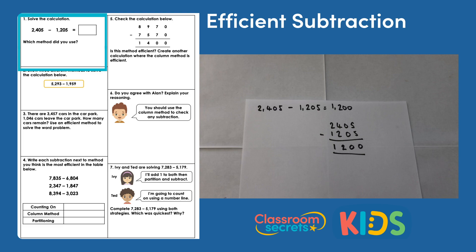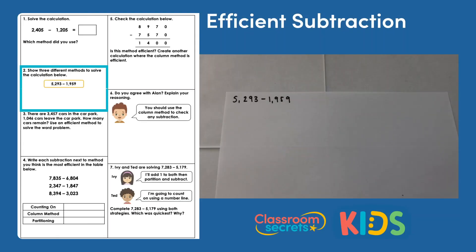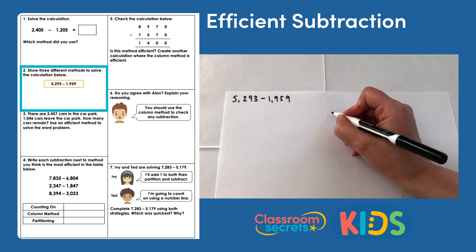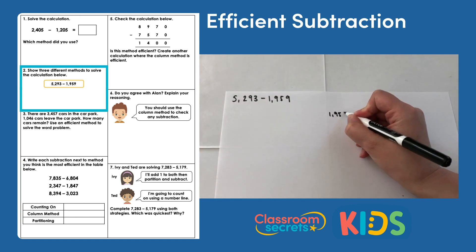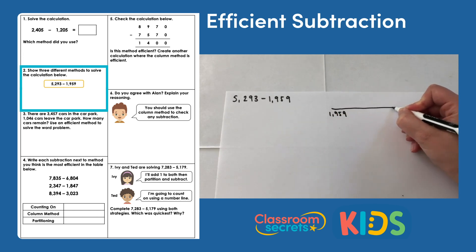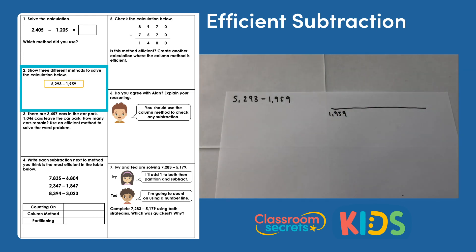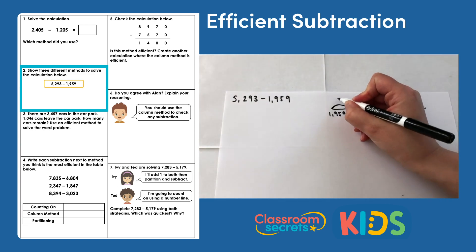Question two: show three different methods to solve the calculation 5,293 subtract 1,959. The different methods are just examples of different ways you could do this. Start by looking at how we could do this on a number line by finding the difference. We'll start with our smaller number, 1,959, and count on in jumps until we get to 5,293. For my first jump, I add 41 to get to 2,000.